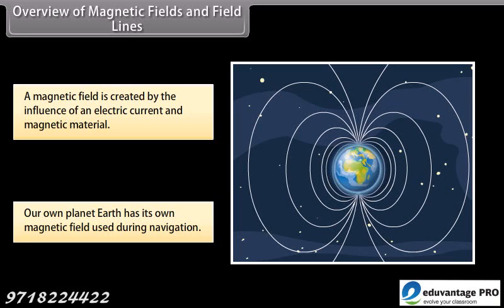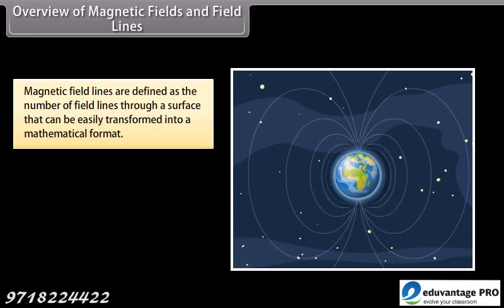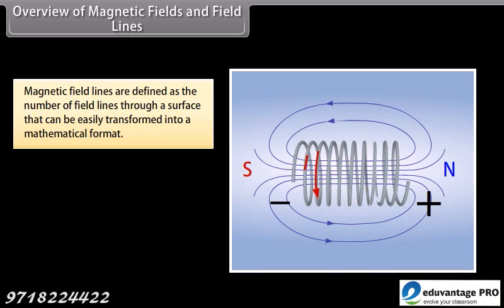Magnetic field lines can be compared to the constant altitude lines that are visible on a map. Magnetic field lines help in stating simple concepts of magnetism easily. These are defined as the number of field lines through a surface. These can be easily transformed into a mathematical format.